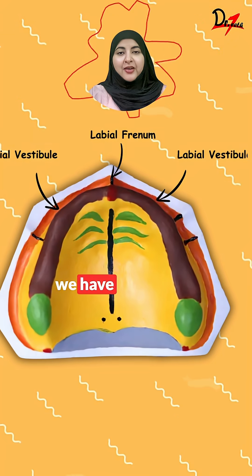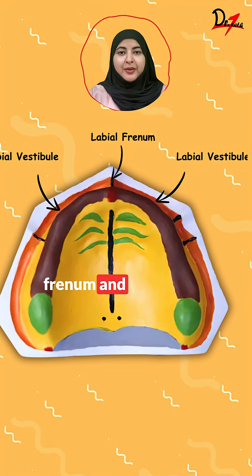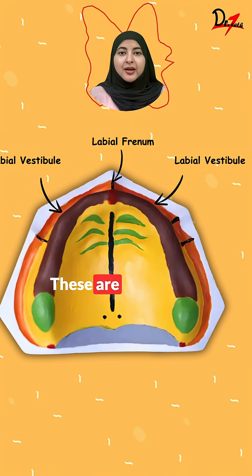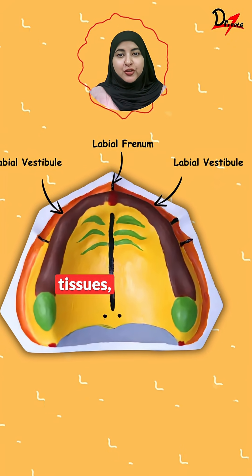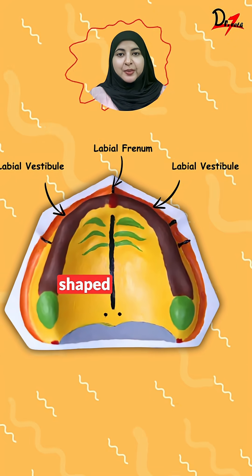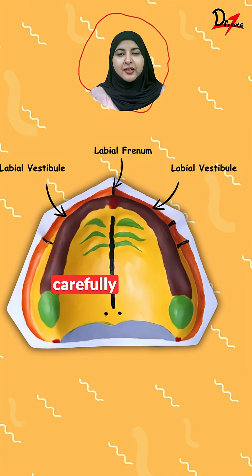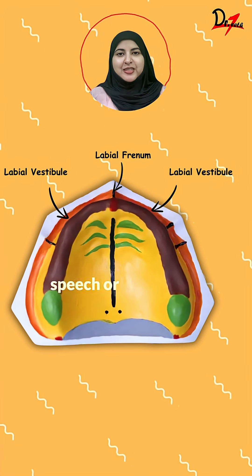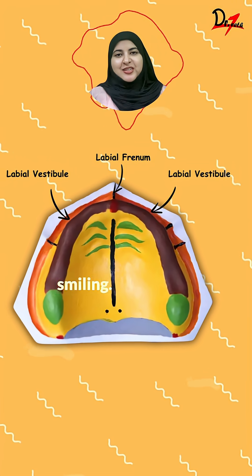At the front, we have the labial frenum and the labial vestibule. These are mobile soft tissues, so the denture must be shaped carefully around them to avoid popping out during speech or smiling.